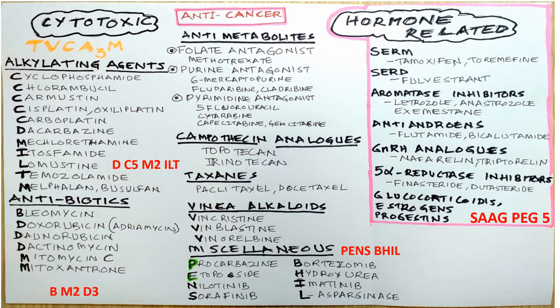Hello everybody, welcome to another classification slide. Here, anti-cancer drugs — we have two major groups: cytotoxic drugs and hormone-related drugs. Among the cytotoxic, there is a mnemonic: TV CAM. There are three A's in this, and they stand for alkylating agents, antibiotics, anti-metabolites, camptothecine analogues, taxanes, vinca alkaloids, and miscellaneous drugs.